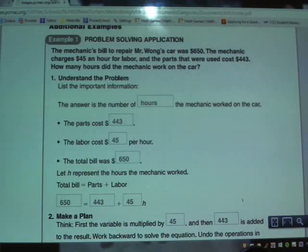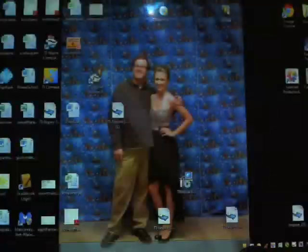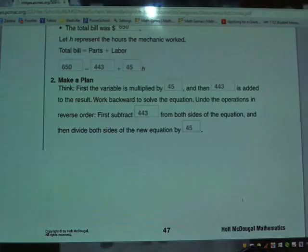Let's look at the making a plan step. The variable is going to be multiplied by 45, and then $443 is added into the result. We'll need to work backwards to solve the equation, and we'll undo the operations in reversed order. Subtract $443 from both sides, and then divide both sides of the new equation by 45.